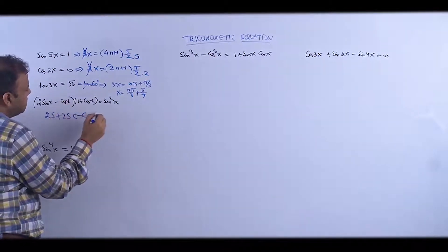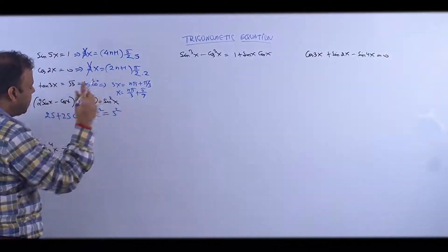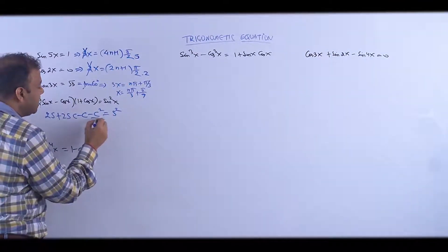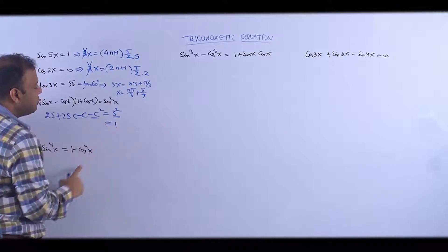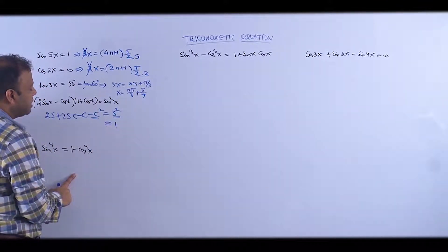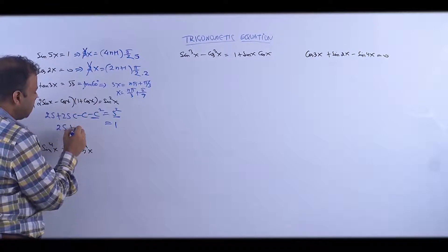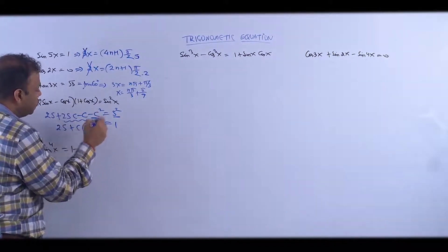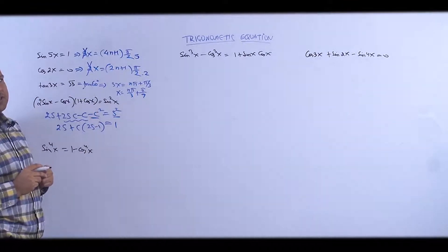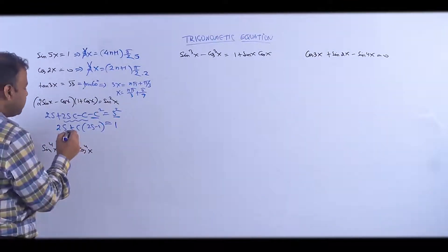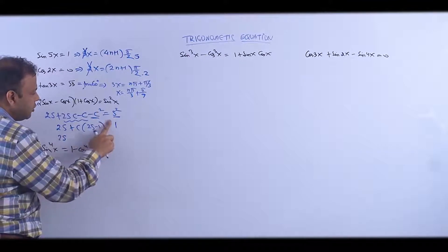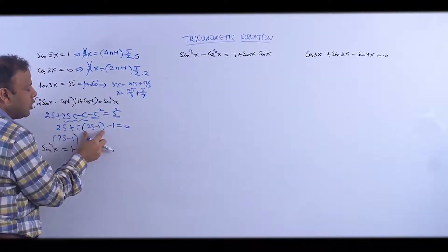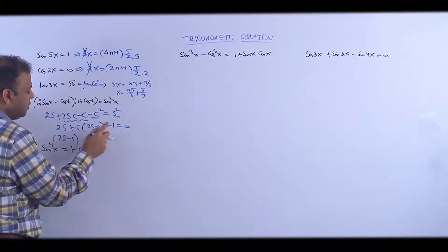We see sin²x + cos²x = 1. After rearranging, taking cos common from two terms gives (2sin(x) - 1). So we get: 2sin(x)(2sin(x) - 1) ... taking (2sin - 1) common gives (2sin - 1)(cos + 1).